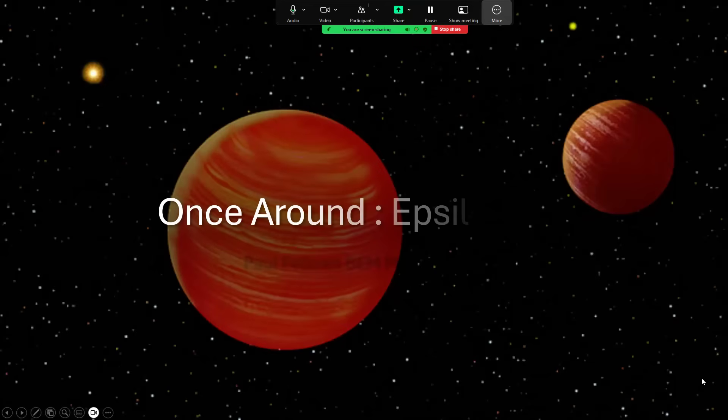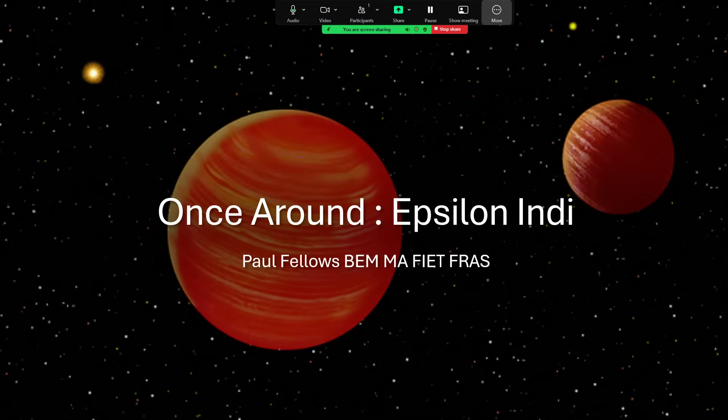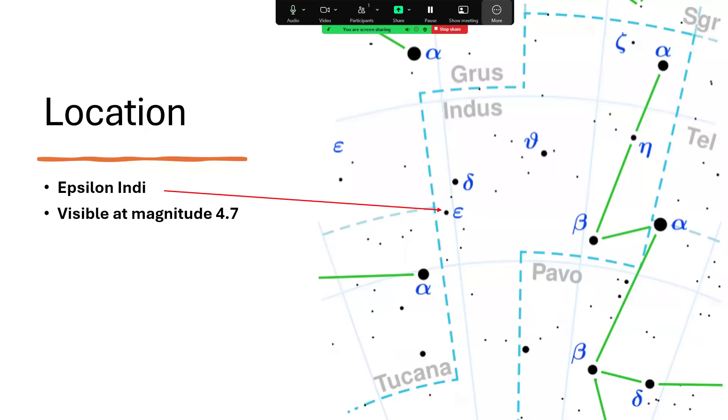Once around, Epsilon Indi. Got this lovely artist's impression for the title slide of this very interesting system. Located in the constellation of Indus here, we have Epsilon Indi, a fairly modest magnitude 4.7 star.